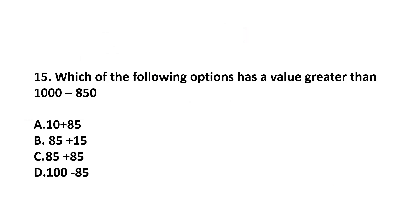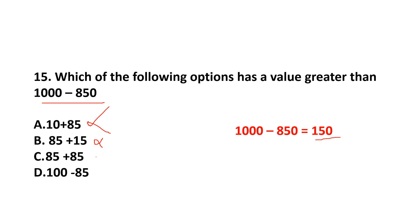Question number 15. Which of the following options has a value greater than 1000 minus 850? First we subtract: 1000 minus 850 equals 150. From the options: 85 plus 10 is 95 — not the answer. 85 plus 15 is 100 — not the answer. 85 plus 85 is 170, which is greater than 150. So, our answer is Option C. Option D: 100 minus 85 is 15 — not the answer.